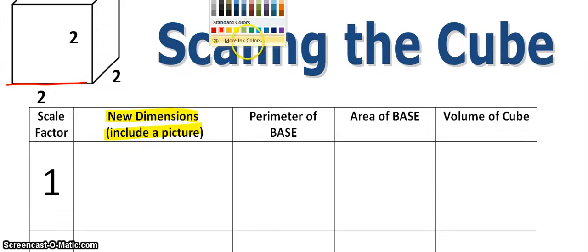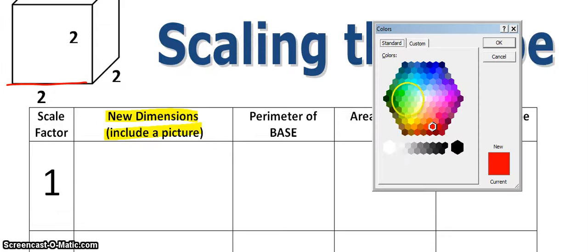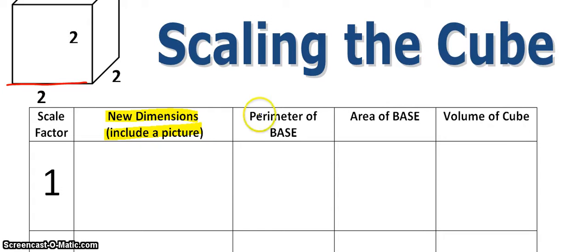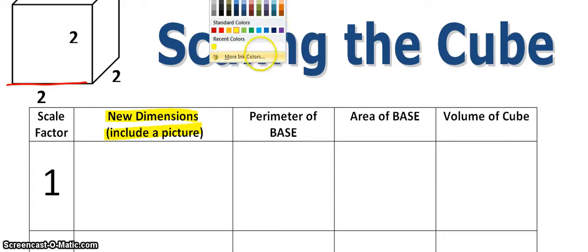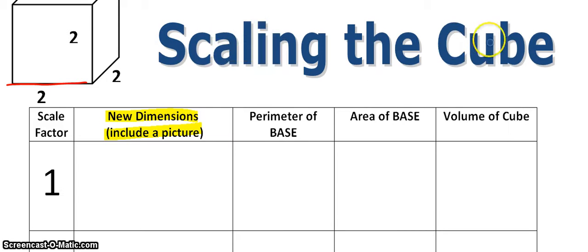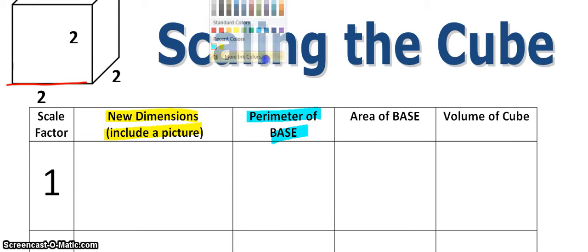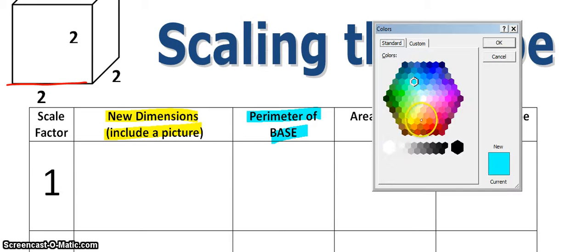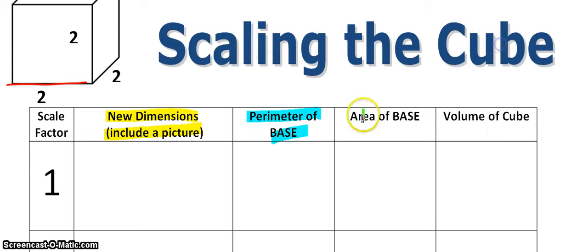What I want to focus on today is: if you scale the dimensions, what is going to happen to the perimeter? What is going to happen to the area? And as a bonus, we're also going to talk about what's going to happen to the volume if it's a 3D shape.